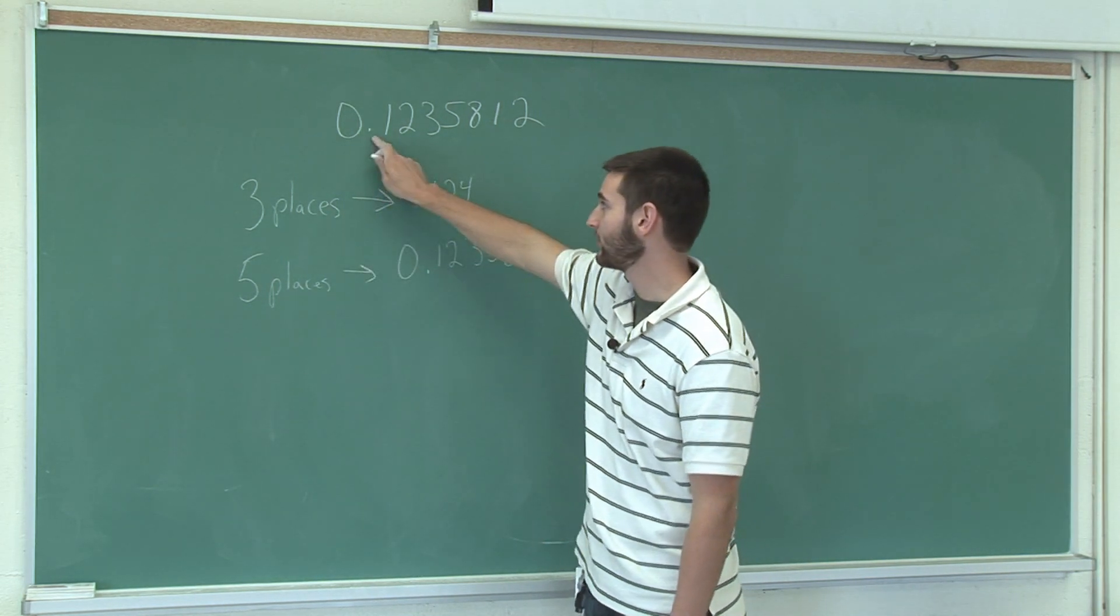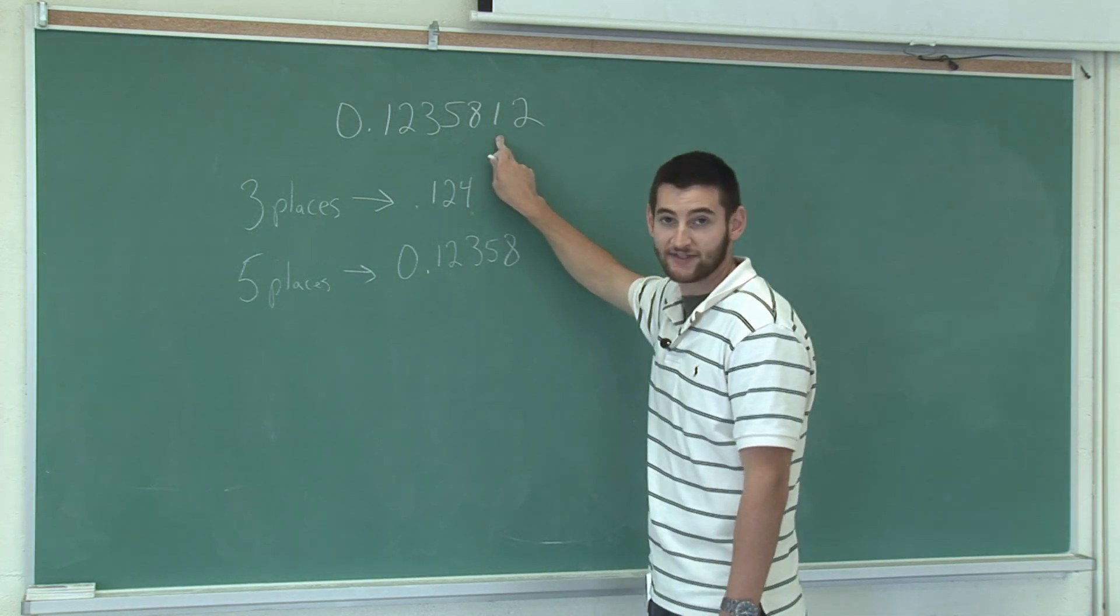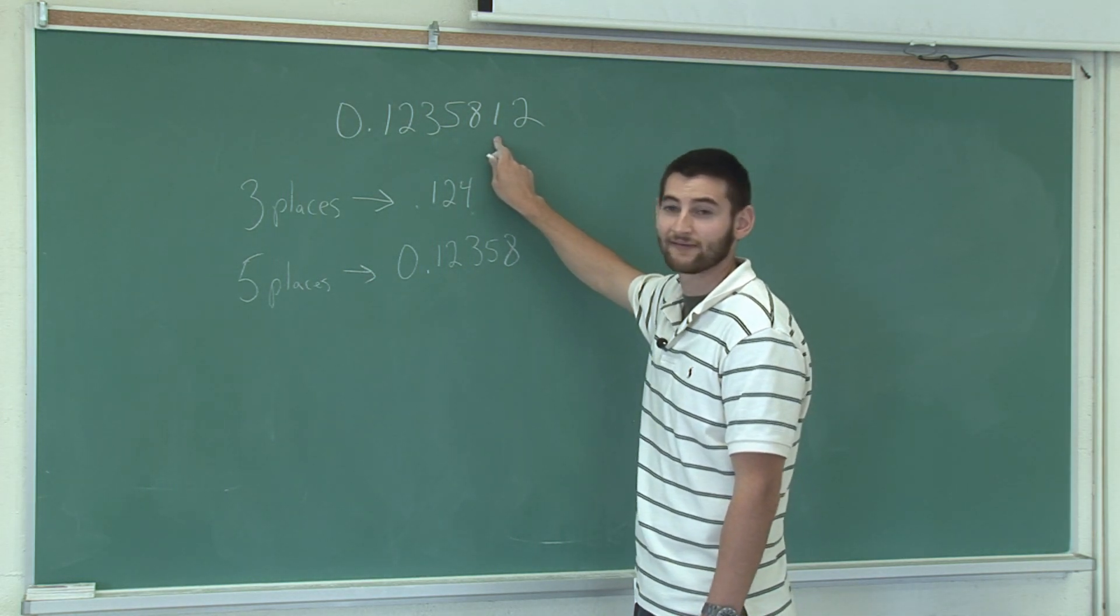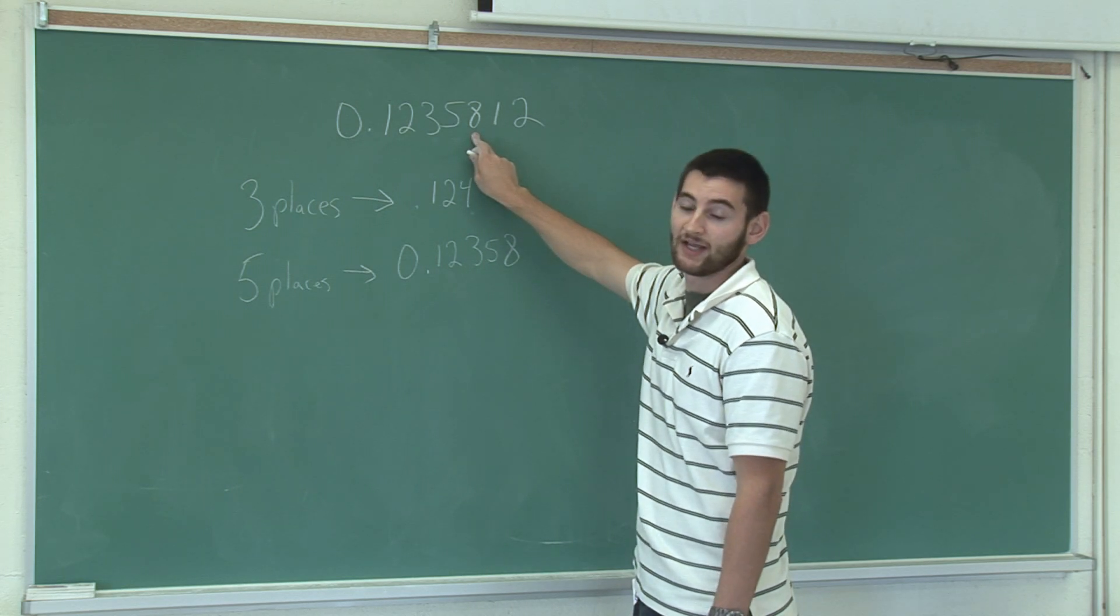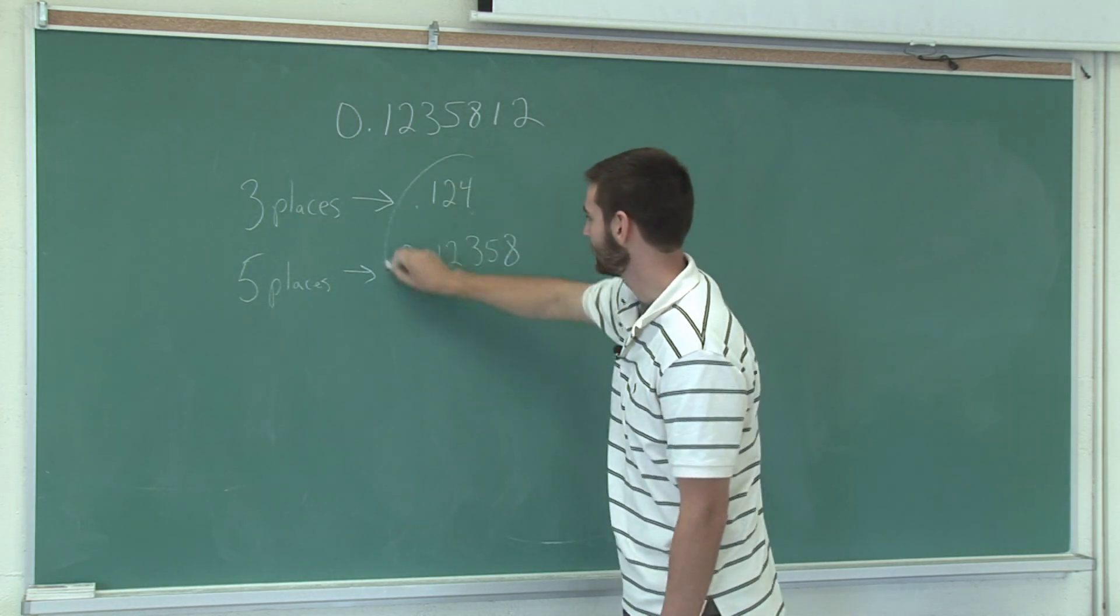Similarly, with any number of places that you wish to round, you look at the next digit. If the next digit is equal to or greater than five, you round up that digit. If it's less than five, you keep that digit the way it is, as you can see in these two examples.